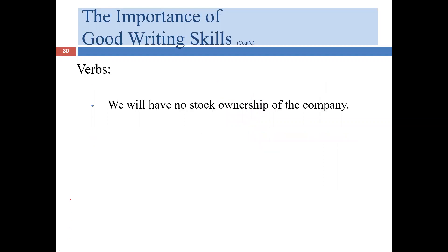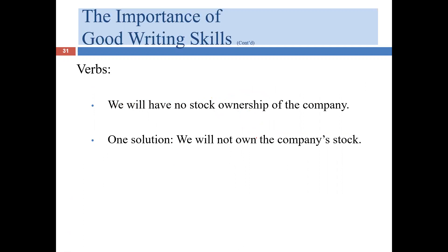'We will have no stock ownership of the company.' We have the nominalization 'ownership' with the '-ship' suffix — a relatively long noun. We can rewrite it: 'We will own no stock of the company.' We went from nine words to seven words, saving two words. Even though we only reduced by two words, you can see the sentence is significantly shorter and more vigorous, interesting, and easy to understand.